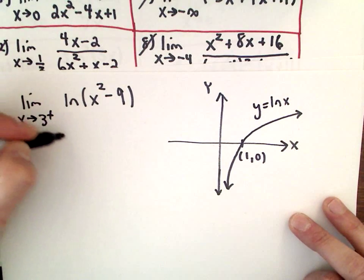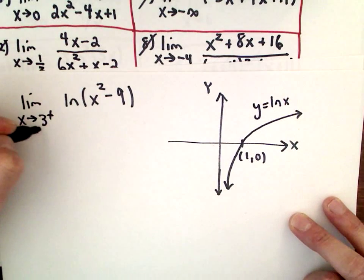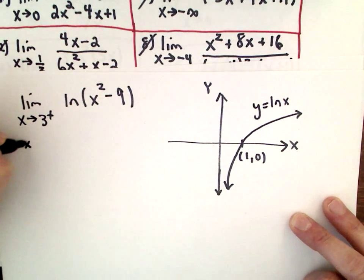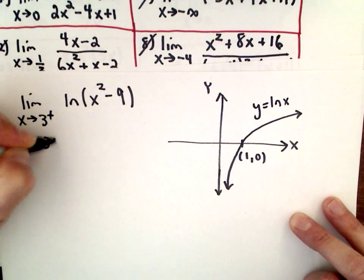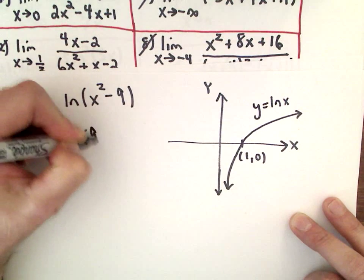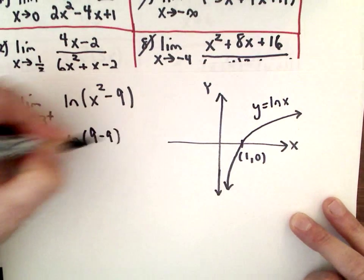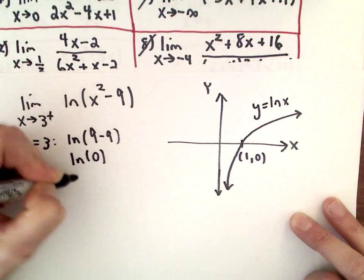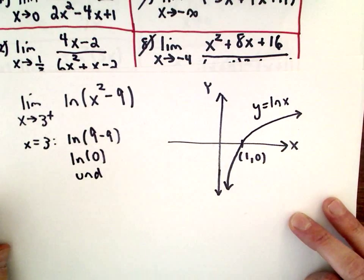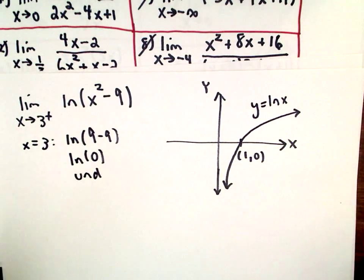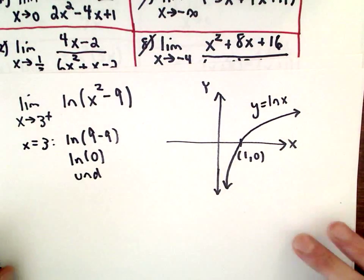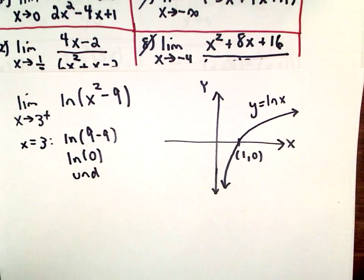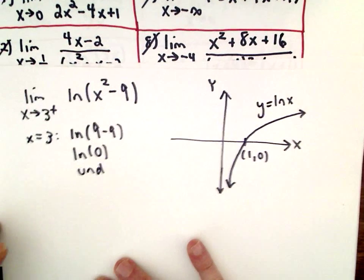If I tried to substitute in x equals 3, I would get the natural logarithm of 9 minus 9, which is the natural logarithm of 0, which is undefined. You can't plug 0 into the natural logarithm — if you don't believe me, put it in your calculator and see what happens.